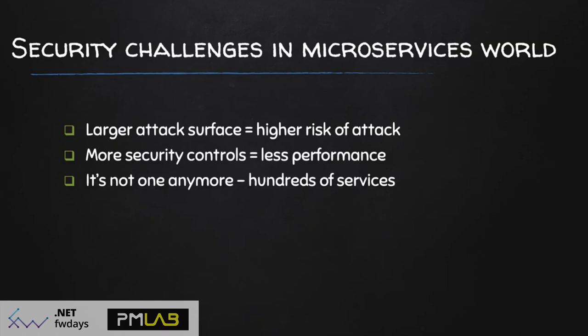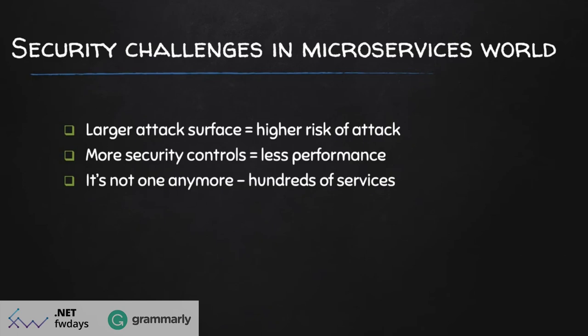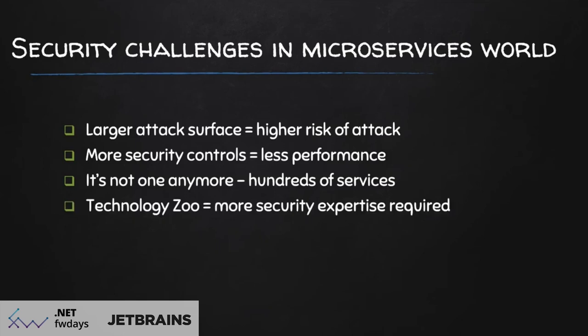With zero-trust networking, you carry out security as close as possible to each resource in your network. Another challenge is that there are now hundreds of services, not one. In monolithic architecture, we manage security centrally for one piece. In microservices, we need to think about tens or even hundreds of services as we deploy and maintain them. For example, if you decide to authenticate microservices with certificates, each microservice must be provisioned with a certificate for service-to-service interactions, raising questions about how to maintain, update, and revoke certificates for each one.